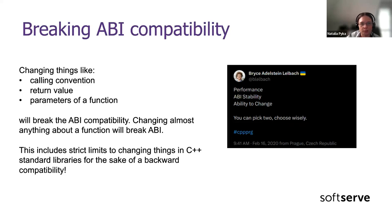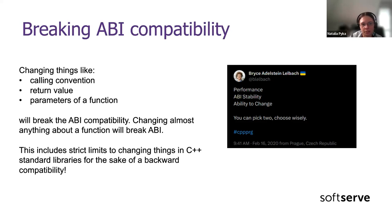Why do I even bring this topic up? Because it's easy to break compatibility. There are good guidelines about what not to do if you don't want to break compatibility — they are in the further reading slides. Generally, changing things like calling convention, return value type, or function signature will break ABI compatibility. What's not good is that changing almost anything about a function or a class will break ABI. Usually it is safe to introduce new things, but changing anything about existing objects can be pretty risky.